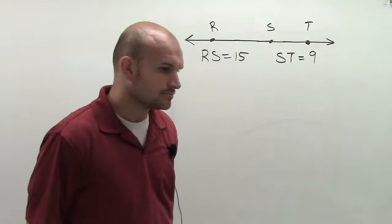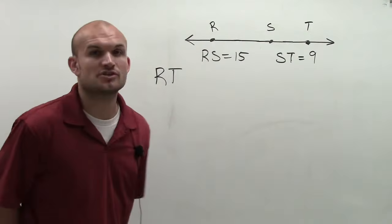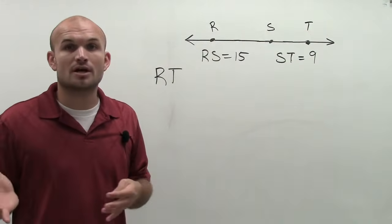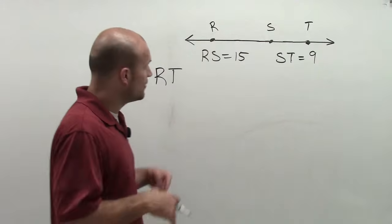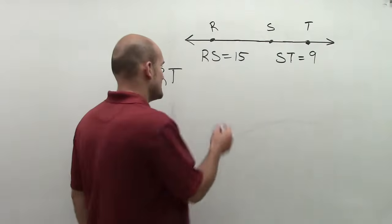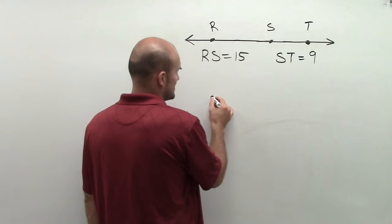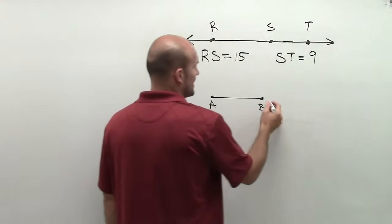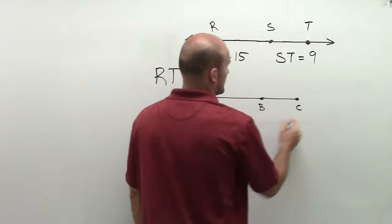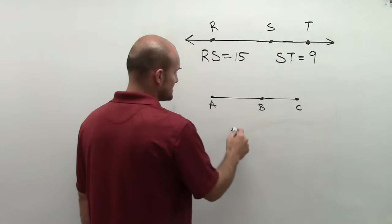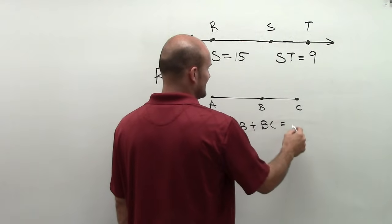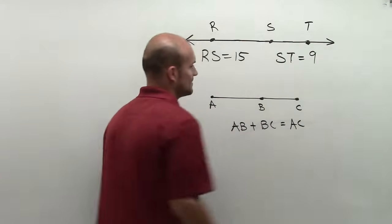So when looking at that, what we need to do is remember our segment addition postulate. And what the segment addition postulate says is if I had a segment, let's just call it AB, and then I had another segment BC, well, what it states is AB plus BC equals the segment AC.